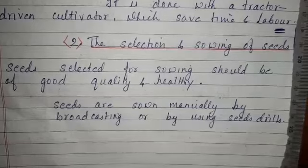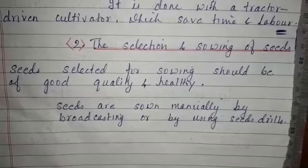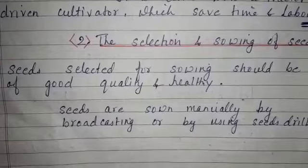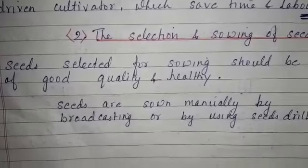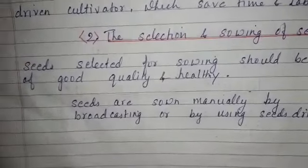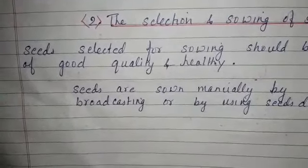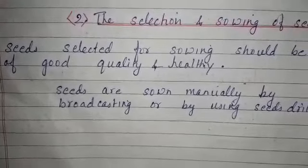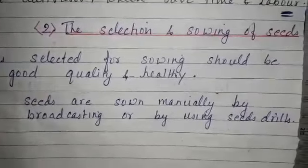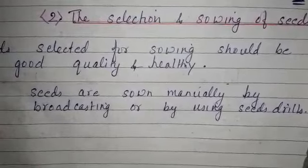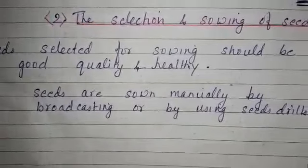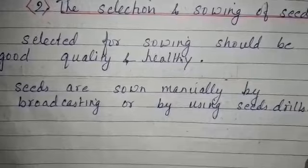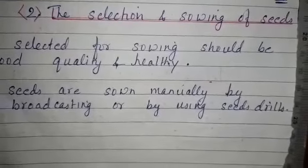The second step is the selection and sowing of seeds. Seeds selected for sowing should be of good quality and healthy — free from any types of disease. Seeds are sown manually by broadcasting or by using a seed drill machine.